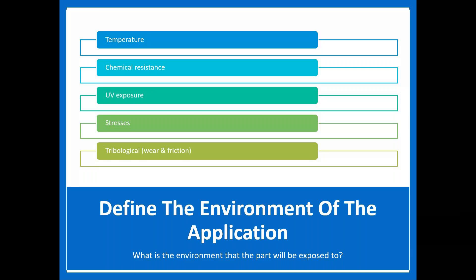After defining and weighing requirements, we need to think about what type of environment the part is going to be in — what it will be exposed to. The majority of considerations are: Will it see certain temperatures? Will it be exposed to certain chemicals? Will it see UV — is it going outside? Will it see certain stresses, or does it need wear and friction performance? We'll talk about each of those briefly in terms of how it affects different materials.